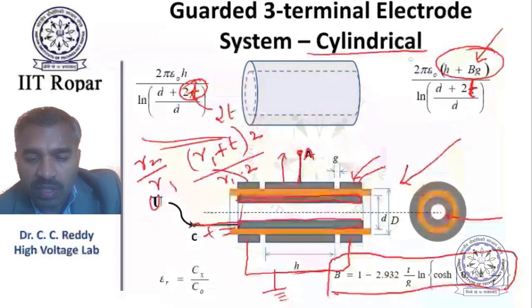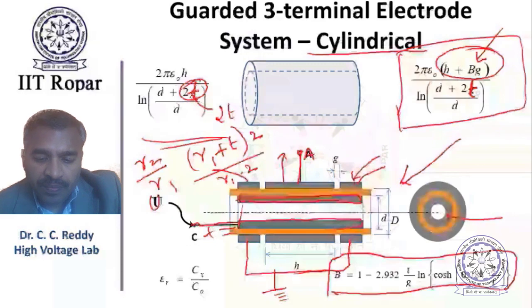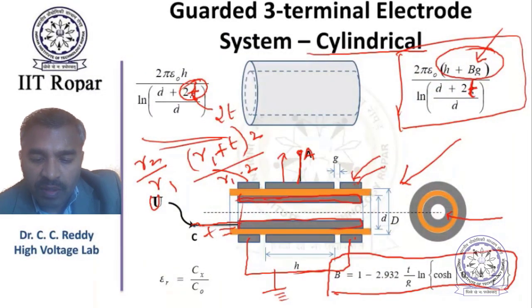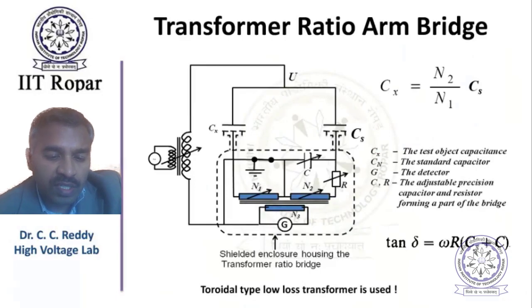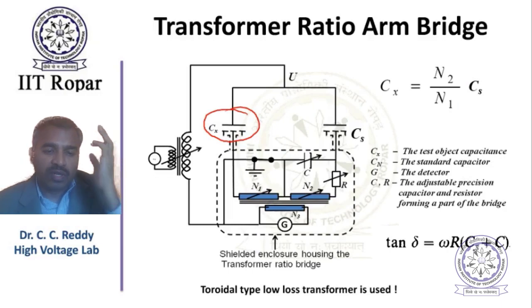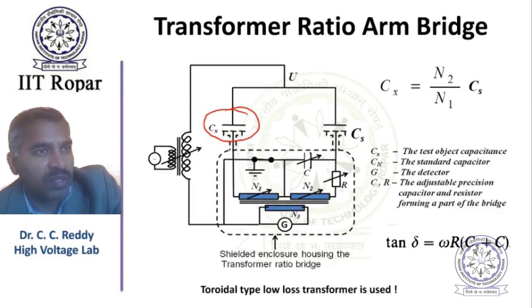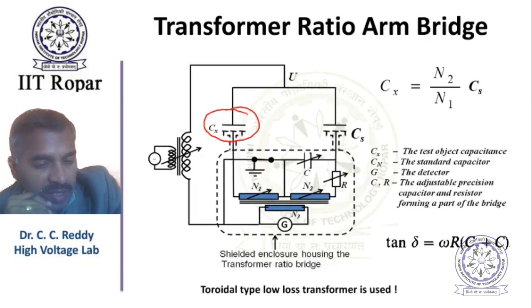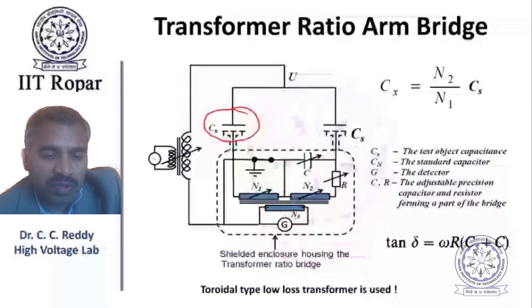These electrode systems are used for Cx, the unknown capacitance, when using sheet samples. When using power equipment such as transformers, proper guarding is required. For power equipment, it is sometimes not possible to completely avoid stray capacitance, so there will be some errors in the estimation. This leads to the transformer ratio arm bridge - a new, more accurate bridge compared to the Schering bridge.